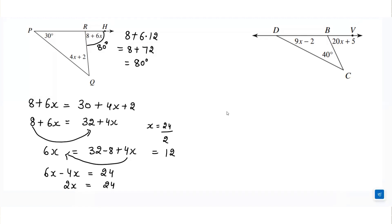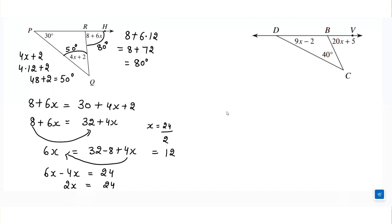Substituting x = 12 into the other expression: 4(12) + 2 = 48 + 2 = 50°. So this interior angle equals 50°. We can verify: 30° + 50° = 80°, which matches the exterior angle.